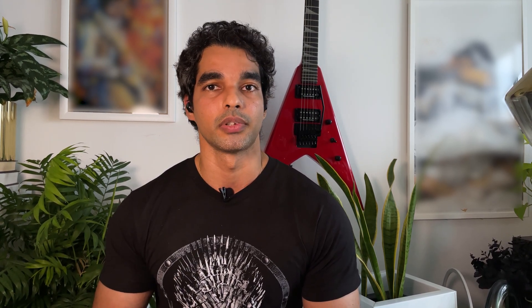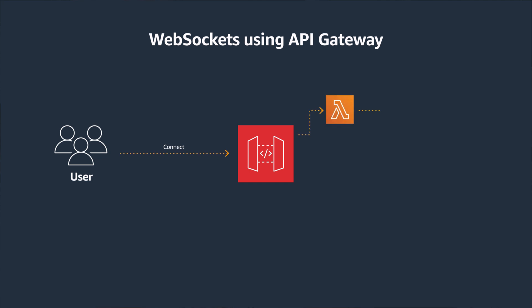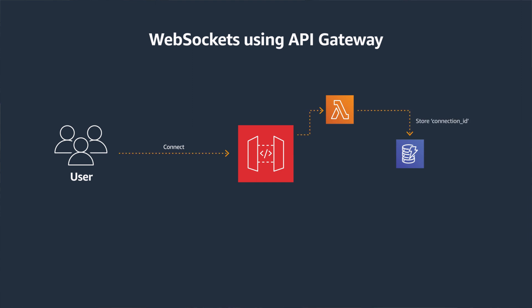For our scenario, we will configure three routes. The first is a connect route, which is used when a client first connects to your WebSocket API. You can define a Lambda proxy integration for this route, which gets triggered when the user connects to the WebSocket API. The Lambda function stores the WebSocket connection ID in a DynamoDB table — we will see in a bit why that's required.